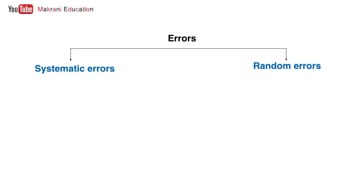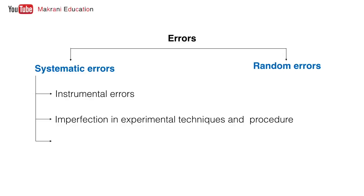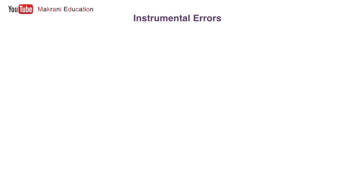Systematic errors are classified as instrumental errors, errors due to imperfection in experimental techniques and procedures, and personal errors. So let us understand each of them in detail.